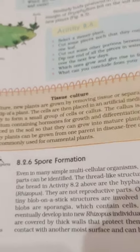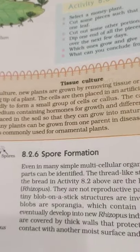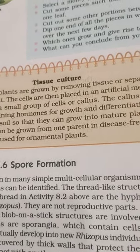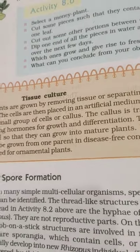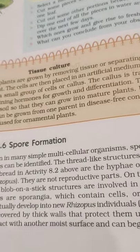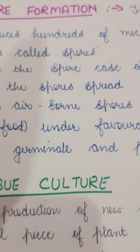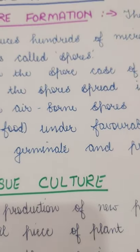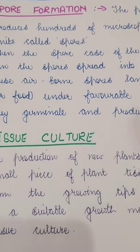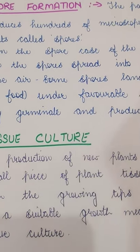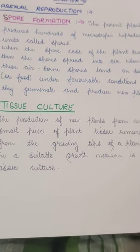Next is spore formation, which is also a part of asexual reproduction and is seen in plants and some microscopic organisms. The parent plant produces hundreds of microscopic spores. When the spore cases of the plant burst, the spores spread in the air. These airborne spores land on food or any moist, favorable surface where they germinate and grow into new plants — for example, fungi.